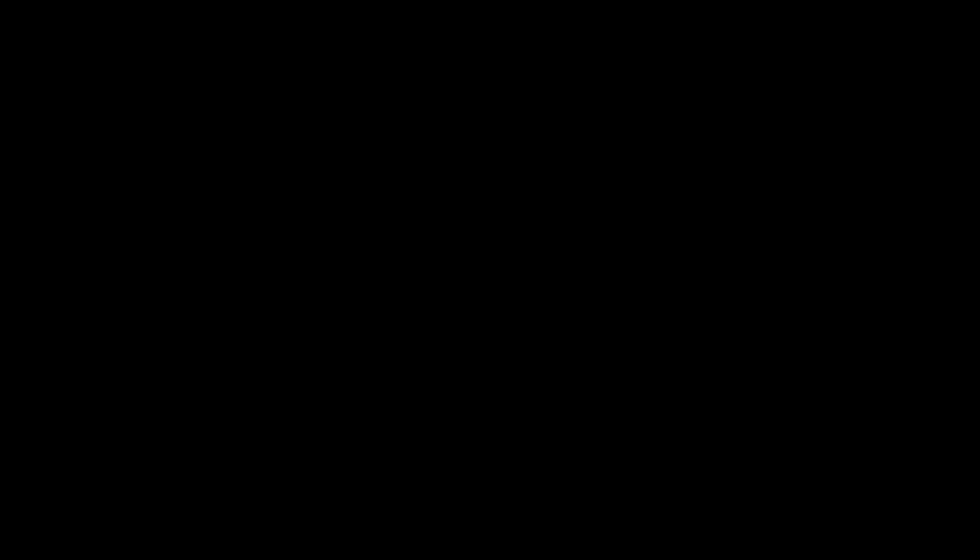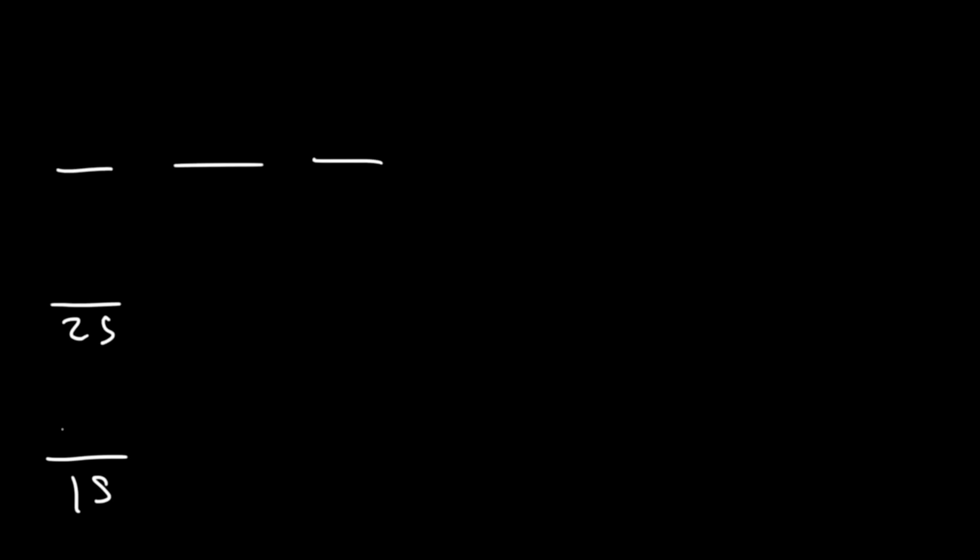The electron configuration of carbon is 1s2, 2s2, 2p2.